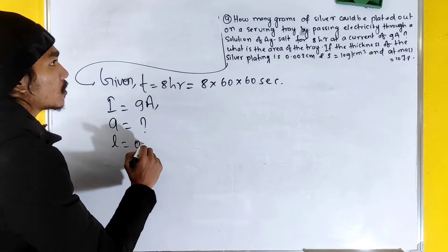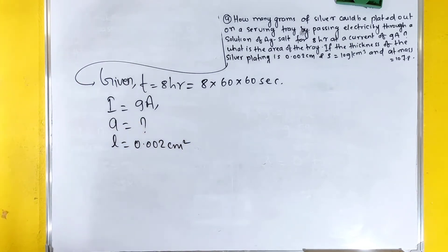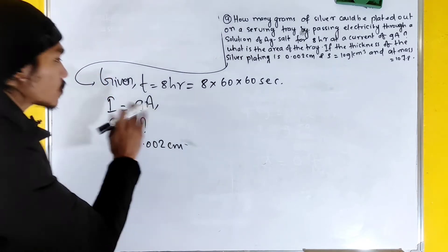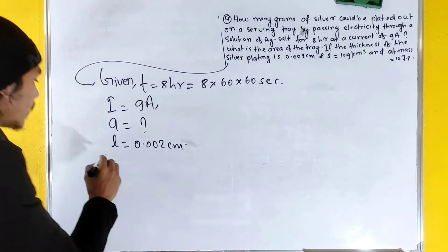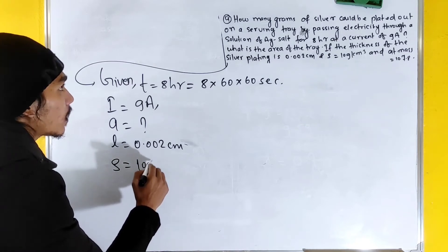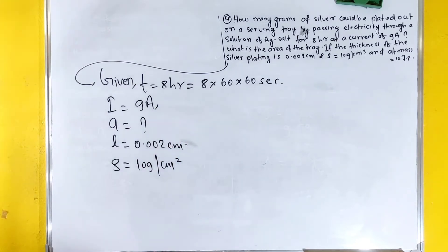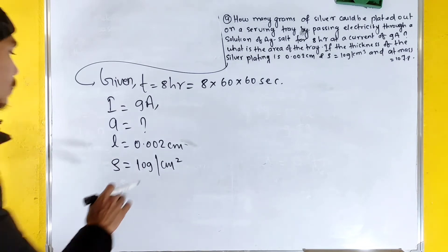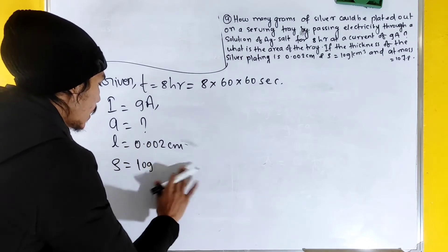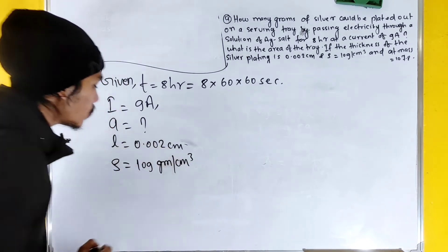The thickness of the silver plate is 0.002 cm. The density is 10.9 gram per centimeter cube.